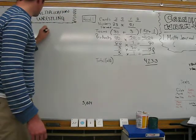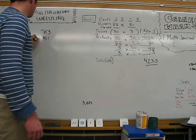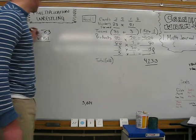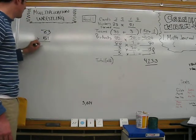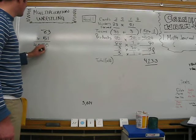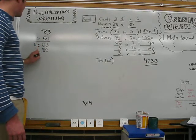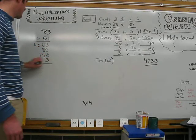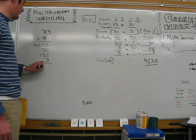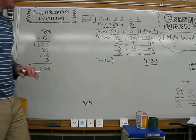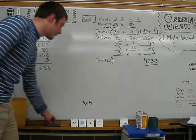Now again, if I did that over here, exact same method. Different strategy. 80 times 50 is 4,000, 80 times 1 is 80, 3 times 50 is 150, 3 times 1 is 3. Add them up, we'll get the exact same thing. So on the sheet, you're really just doing your partial products.